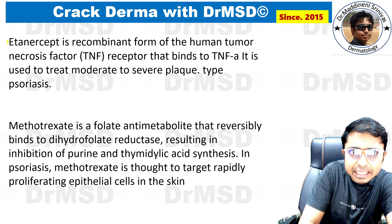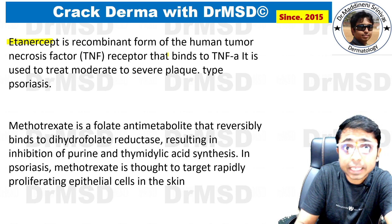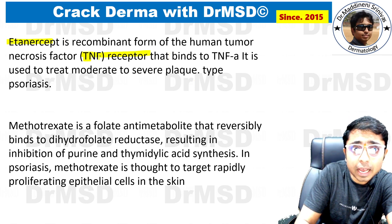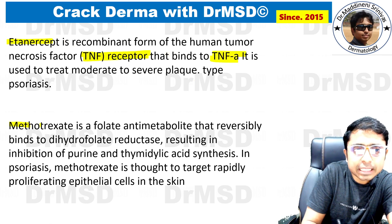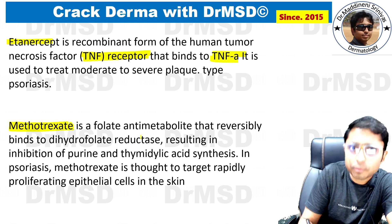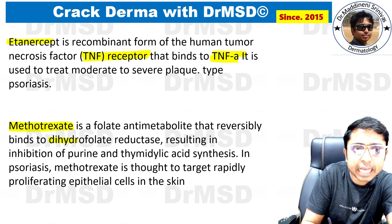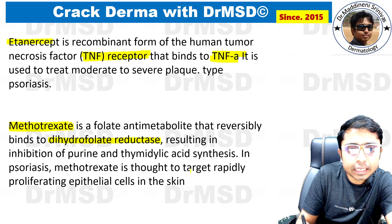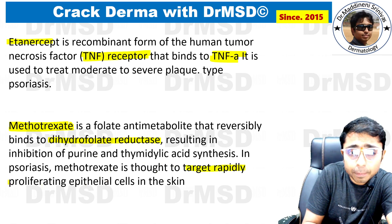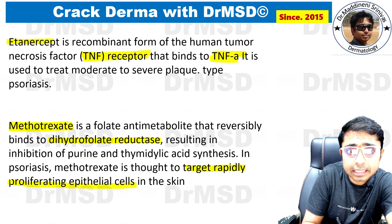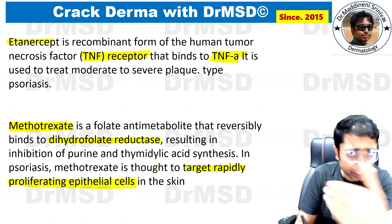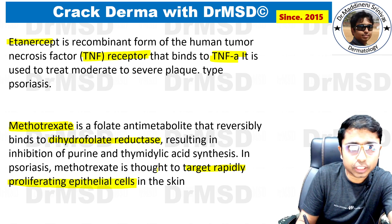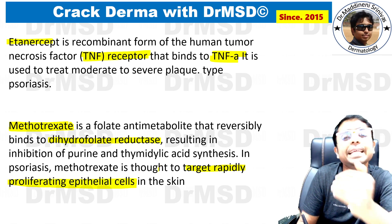Etanercept is a recombinant form of the human tumor necrosis factor receptor and it binds to tumor necrosis factor alpha. Methotrexate, as you may know from pharmacology, is a dihydrofolate reductase inhibitor. It targets rapidly proliferating epithelial cells in the skin, thereby reducing keratinocyte proliferation and reducing scaling clinically.